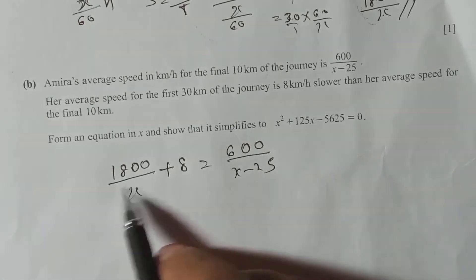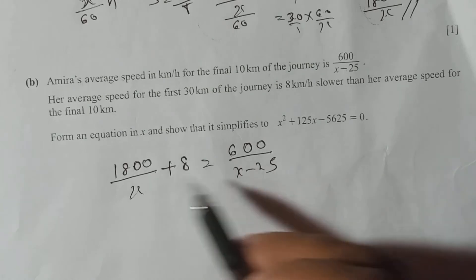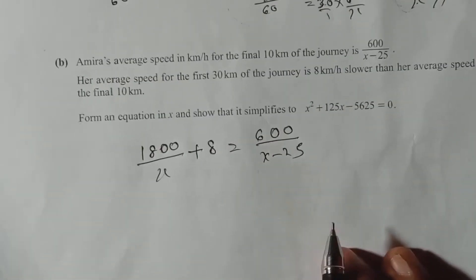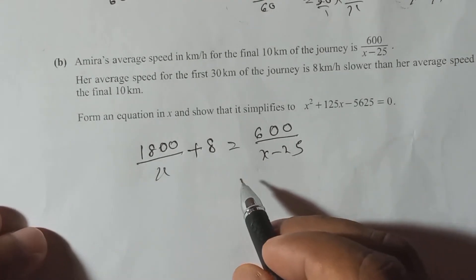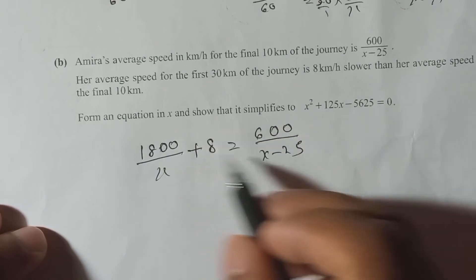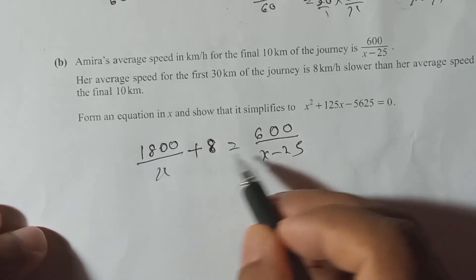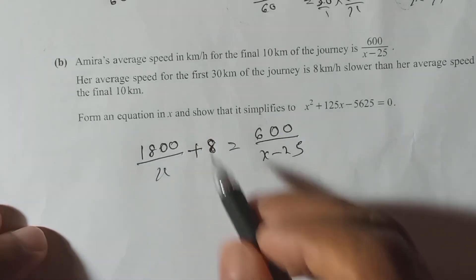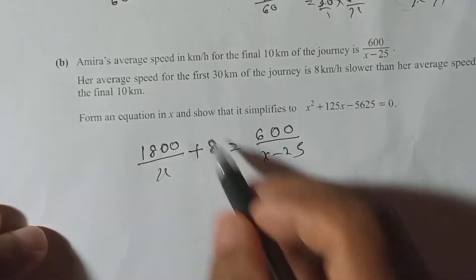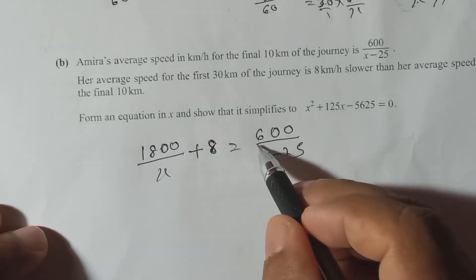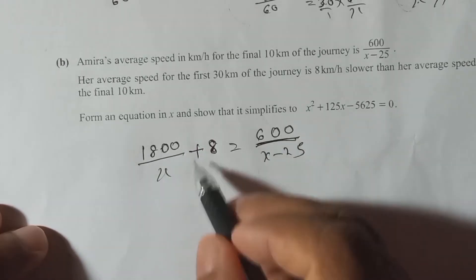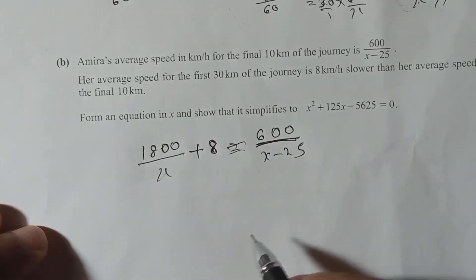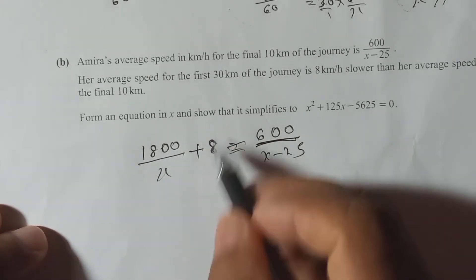The last 10 km speed equals the first 30 km speed plus 8. Now we need to simplify this into a standard format. It's difficult to apply cross multiplication directly because the left side has a fraction plus another term. So let's make the left side a single fraction by giving both terms the same denominator X — multiply 8 by X/X to get 8x/x.